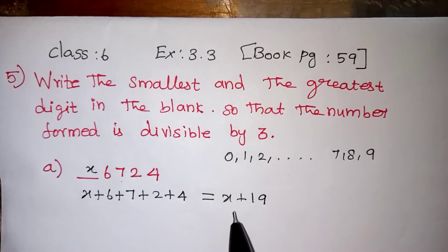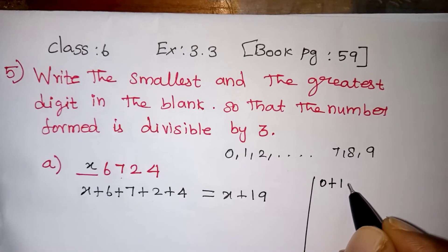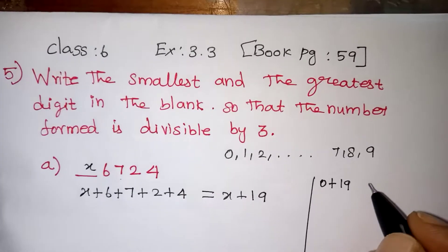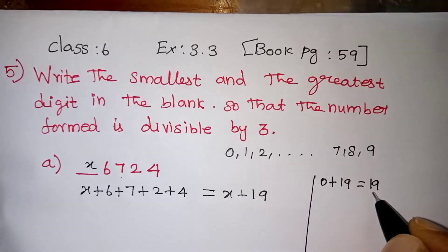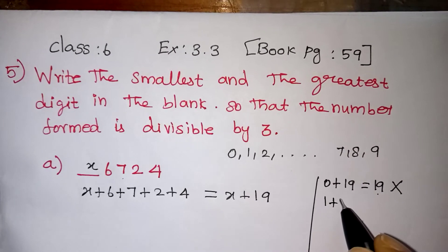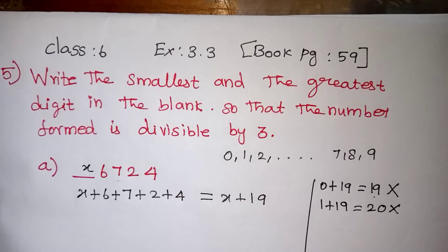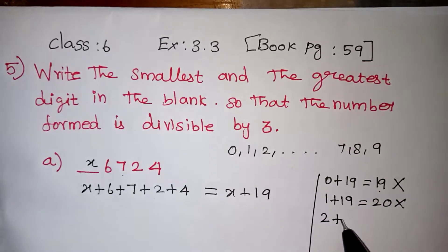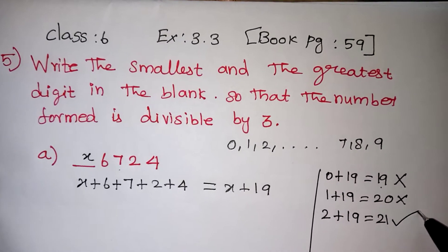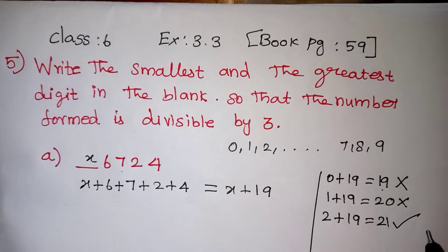Suppose we are taking 0 — in the rough column, 0 plus 19 is 19, and 19 will not come in the 3 table. So let us take 1: 1 plus 19 is 20, and 20 will never come in the 3 table. Suppose we are taking 2: 2 plus 19 is 21, and 21 will come in the 3 table because 3 sevens are 21, or 2 plus 1 will give you 3 again.